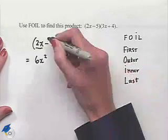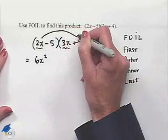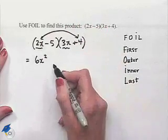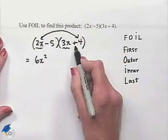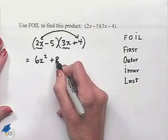The outer tells us to multiply the terms that are on the outside of this product. That means we're going to multiply 2x times positive 4, which will give us a plus 8x.